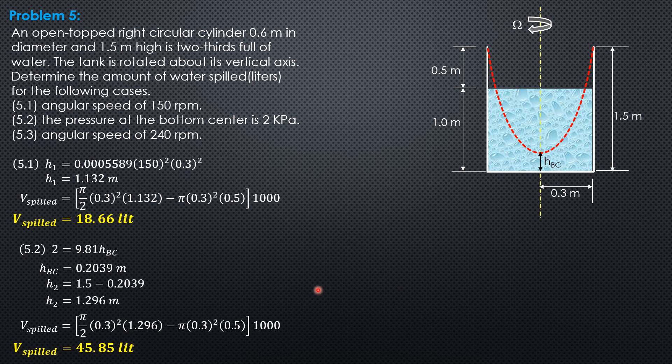For angular speed of 240 rpm, let's compute H3: 0.0005589 times 240 squared times 0.3 squared. H sub 3 is 2.897, which is greater than 1.5. So the imaginary parabolic surface exposes the bottom and extends beyond the bottom center. The total height of this is 2.897, so 2.897 minus 1.5 is the height below the bottom: 1.397.